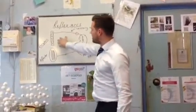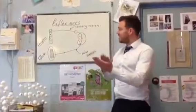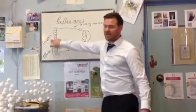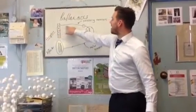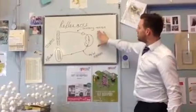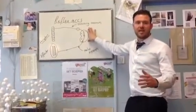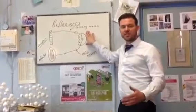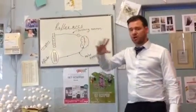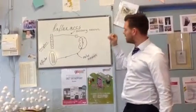In a reflex arc, we've got receptors. In this case, when I was touching the Bunsen burner, it's in my hands. The receptors detect that heat and then they pass a message down the sensory neuron to the spinal cord. The spinal cord is part of the CNS, the central nervous system. The message does not go to the brain — there is no conscious decision in moving your hand away.